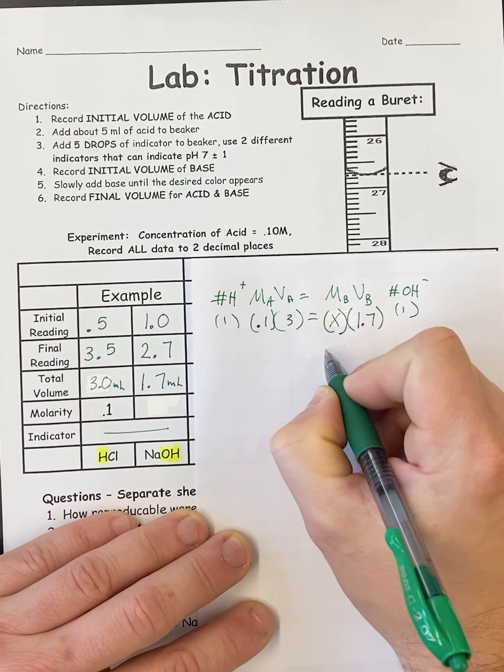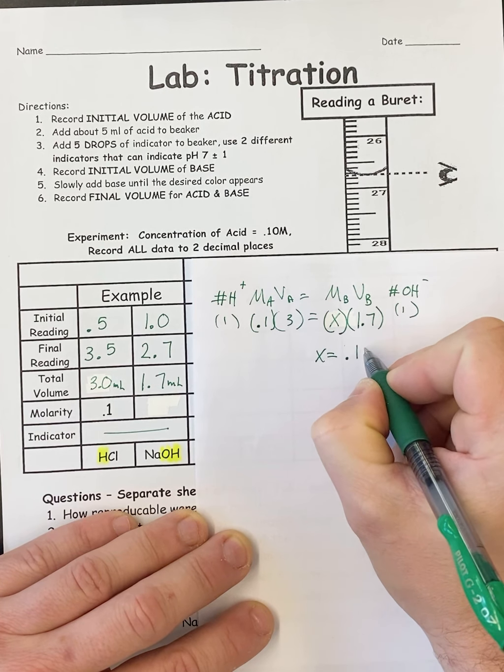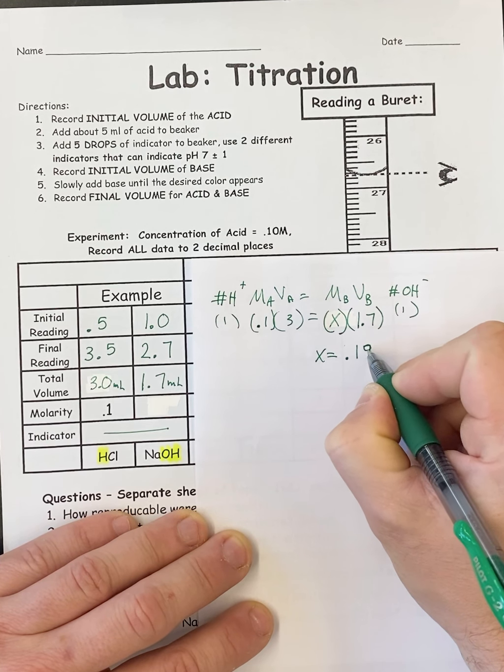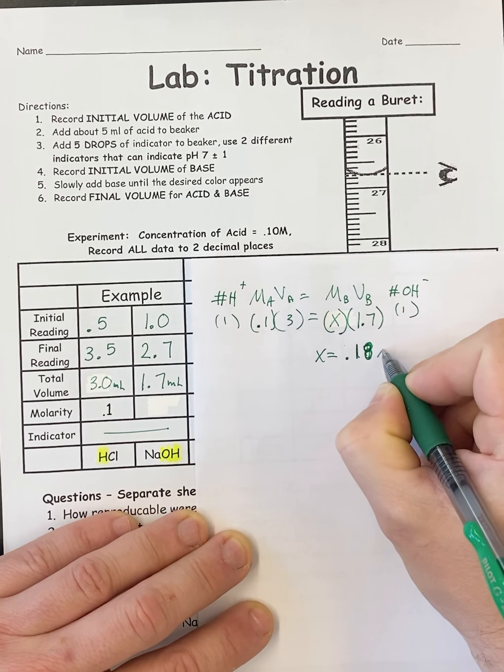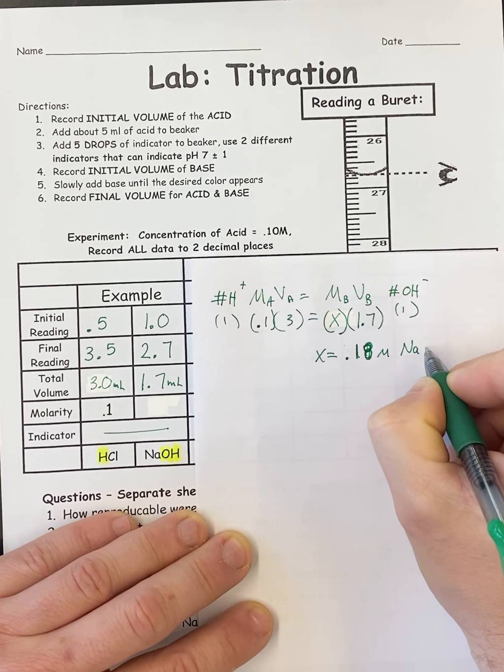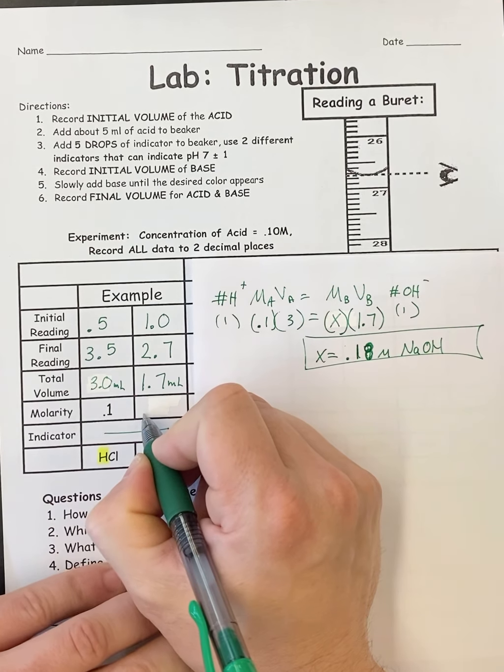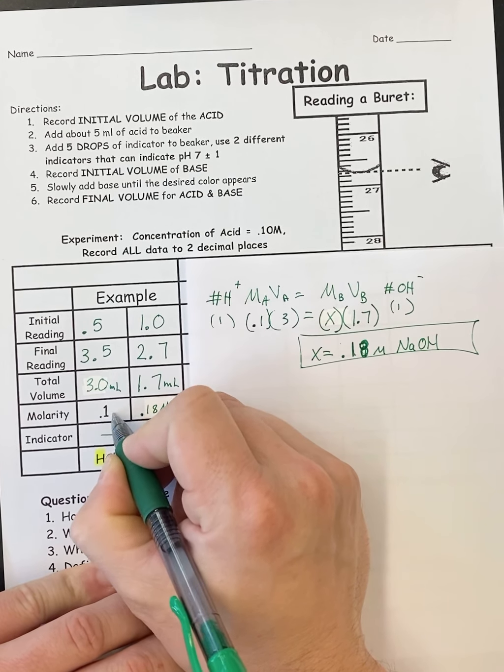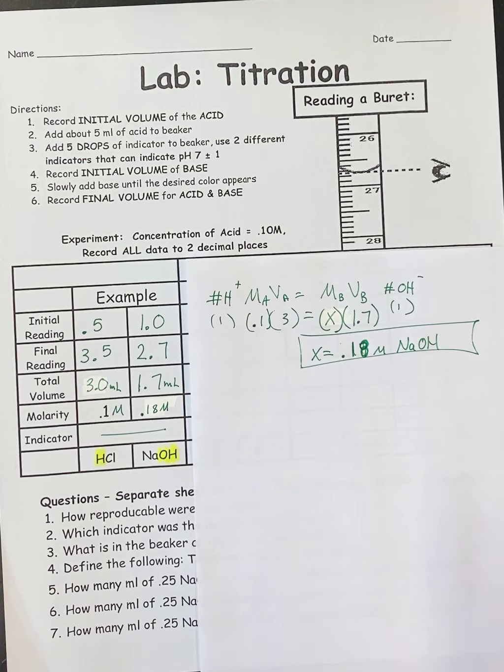And I get 0.17, or, well, it rounds to 0.18. So we'll go out to two decimals. So 0.18 molar NaOH. So for this one, I would get 0.18 molar. And the base is NaOH. And that's all you're doing. You're doing the setup, and that's it.